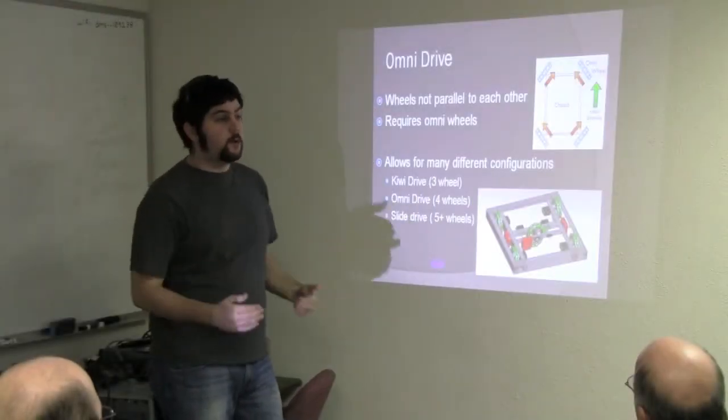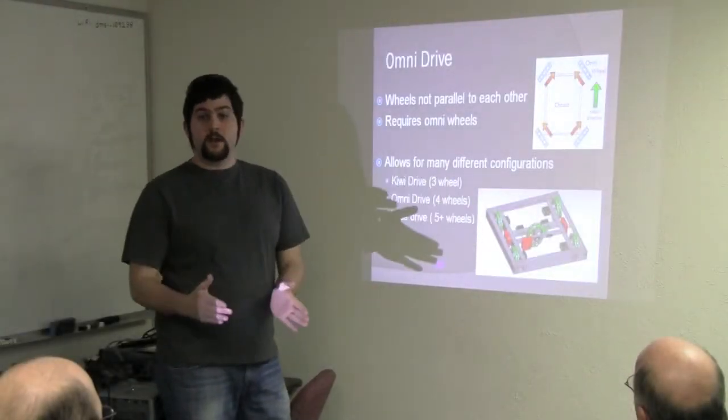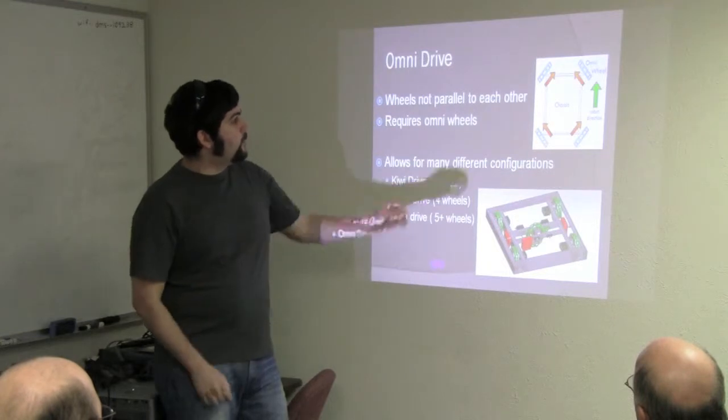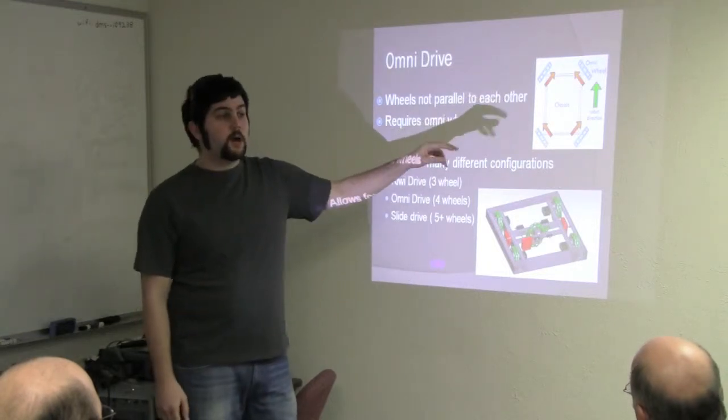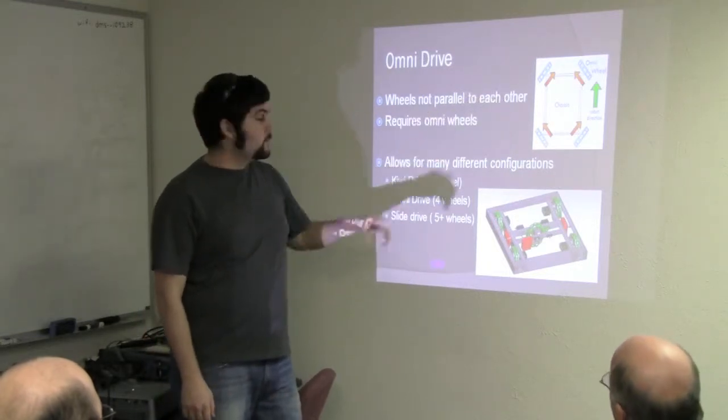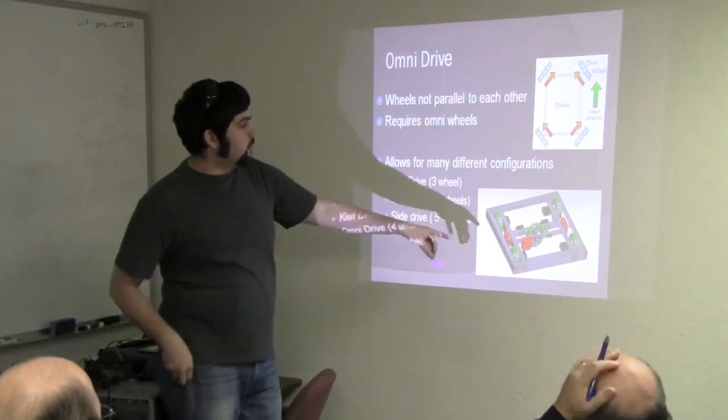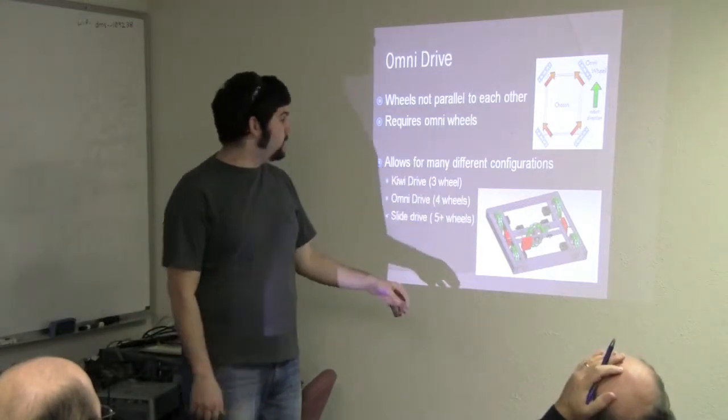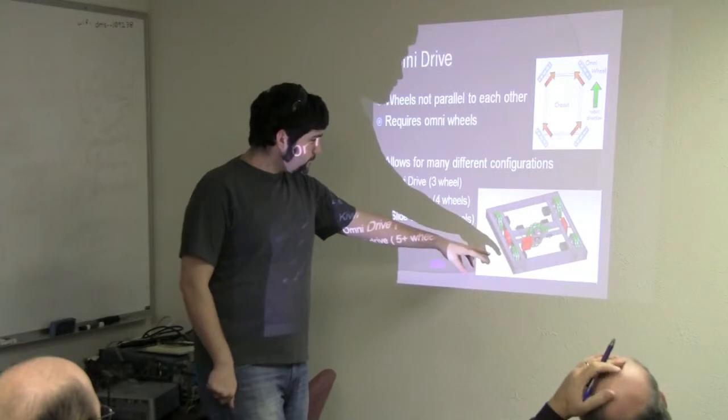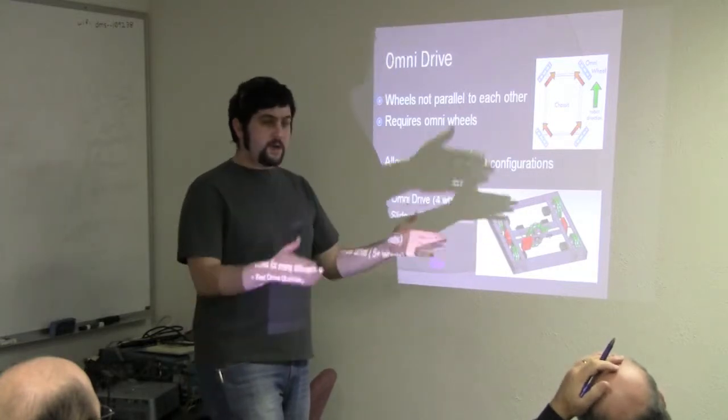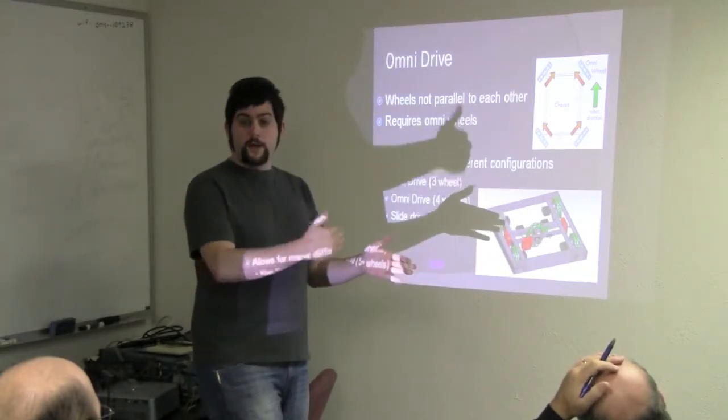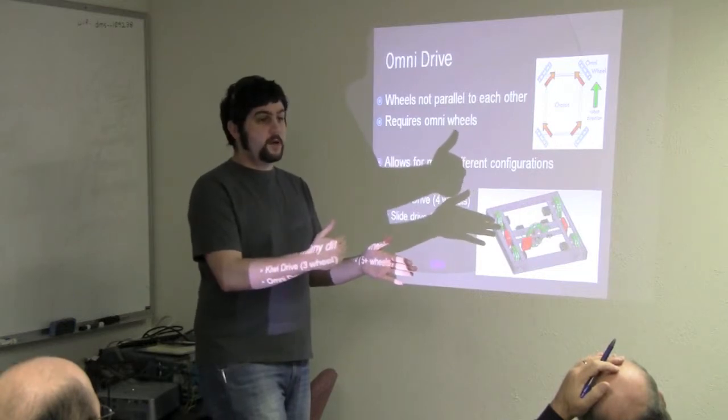The purpose of Omni wheels is to allow the wheel to slip so that you can translate in other directions. Other common uses of this is like a Kiwi drive where you have three wheels. And then this is also a newer type of Omni drive called a slide drive where you basically have a squat four-wheel robot and you have one Omni wheel that's perpendicular.